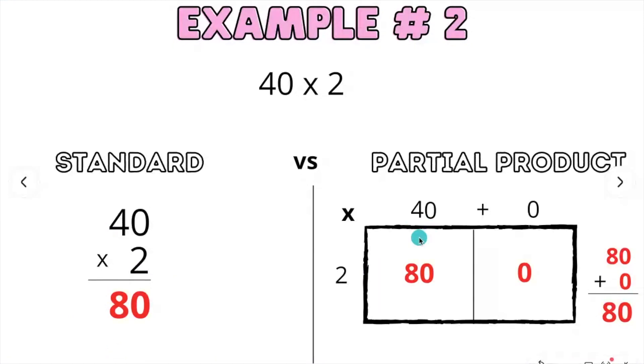Partial product. 40 has no ones, so it's just 40 plus 0, times 2. 40 times 2 is 80. 0 times 2 is 0. So therefore, 80 plus 0 equals 80.